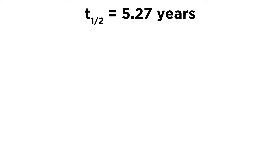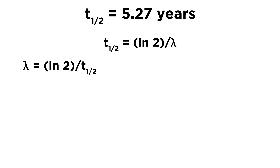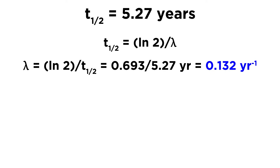Let's put our value for half-life up at the top: 5.27 years. We have the expression where the half-life equals the natural log of 2 over the decay constant. Solving for the decay constant, we bring it to the left side and the half-life to the denominator on the right. Plugging in, the natural log of 2 is 0.693, and the half-life is 5.27 years, giving us a decay constant of 0.132 years to the minus 1.